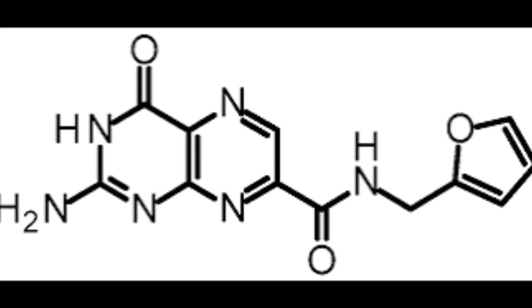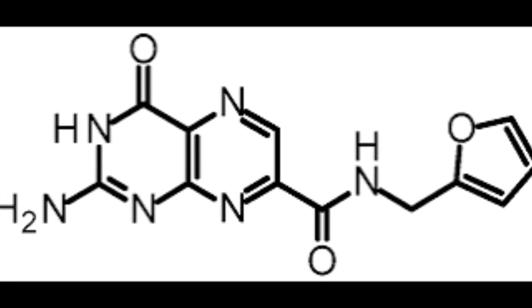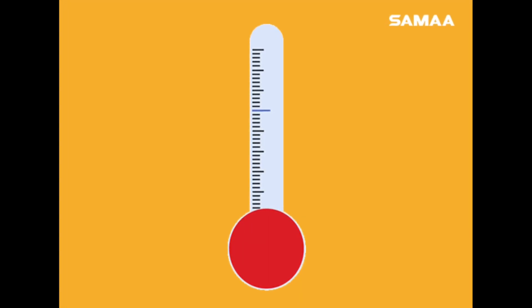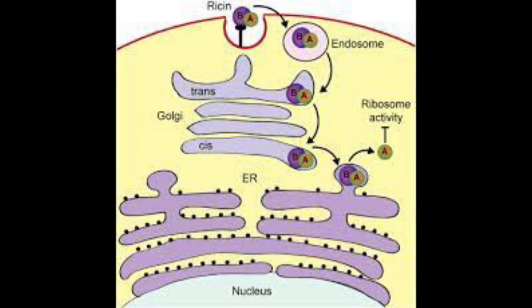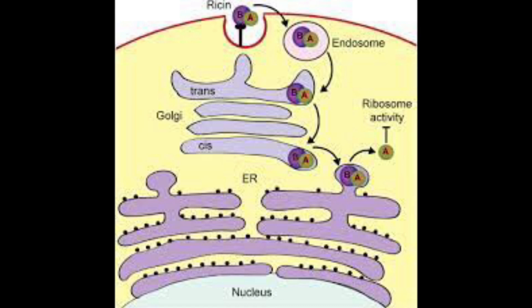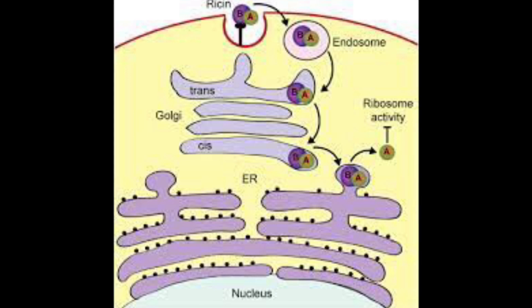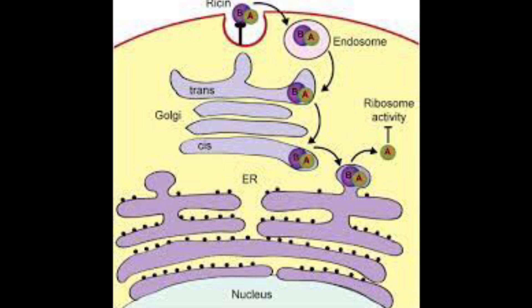Ricin is very stable and resilient and can survive high temperatures and even some chemical treatments. It is a two-part toxin consisting of two chains: the B chain, responsible for targeting cells, and the A chain, which is the toxic component. When a person is poisoned, the ricin molecules bind to carbohydrates on the cell surface and facilitate the entry of the toxin.